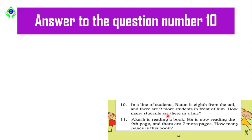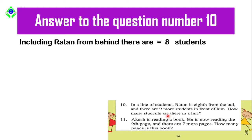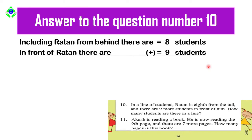Let's go to the board. First, you should write: 'Including Raton, from behind there are eight students.' After that, write: 'In front of Raton there are nine students.' Since the question asks how many students are in the line, this is an addition problem, so you should write a plus sign between the two numbers.